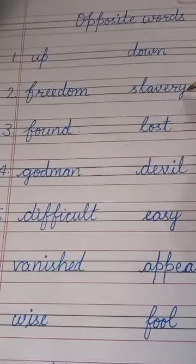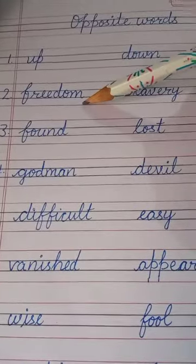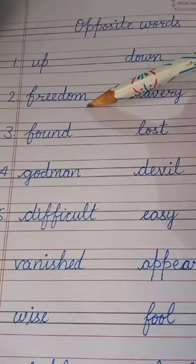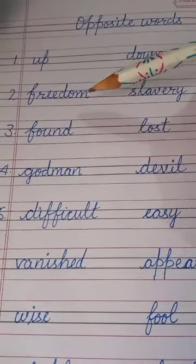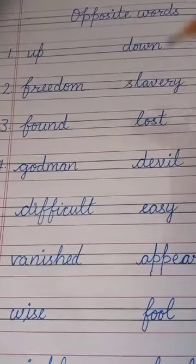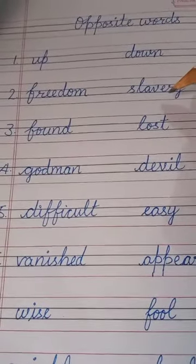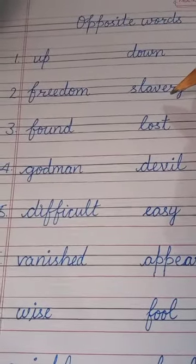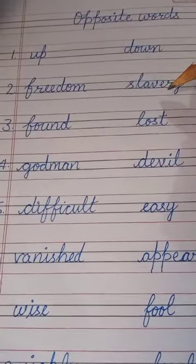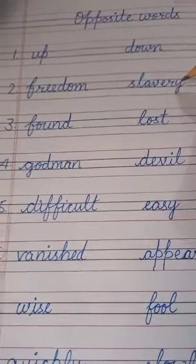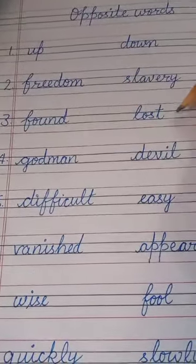Freedom — its opposite is slavery. Freedom means we are free to do anything. Slavery means when we become a slave, we have proper restrictions to do any work — that is called slavery. Found — its opposite is lost.